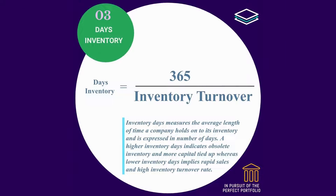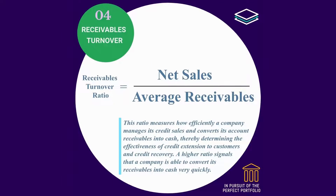A lower inventory turnover suggests slow movement of inventory and more tied-up capital. Days inventory is equal to 365 divided by inventory turnover. Inventory days measures the average length of time a company holds onto its inventory, expressed in number of days. A higher inventory days indicates obsolete inventory and more capital tied-up, whereas lower inventory days implies rapid sales and a high inventory turnover rate. Receivables turnover ratio is equal to net sales divided by average receivables. This ratio measures how efficiently a company manages its credit sales and converts its accounts receivable into cash, thereby determining the effectiveness of credit extension to customers and credit recovery. A higher ratio signals that a company is able to convert its receivables into cash very quickly.